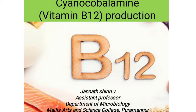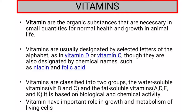Vitamins are the organic compounds required by an organism as an important nutrient in a limited amount. They are designated by alphabetic letters, e.g. vitamin D or vitamin C, and also they are designated by chemical names such as biotin, folic acid, niacin, cyanocobalamin, etc.